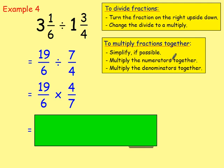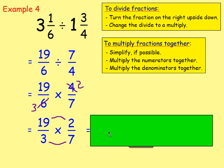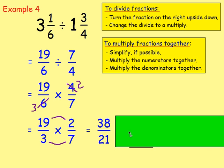To multiply fractions, simplify if possible. Can 19 sixths simplify? No. Can 4 sevenths simplify? No. Do 19 and 7 share a common factor? No. Do 4 and 6 share a common factor? Yes — 2! So 6 divided by 2 gives 3, and 4 divided by 2 gives 2. Rewriting: 19 over 3 multiplied by 2 sevenths. Multiply the numerators: 19 times 2 is 38. Multiply the denominators: 3 times 7 is 21. So we have 38 over 21.